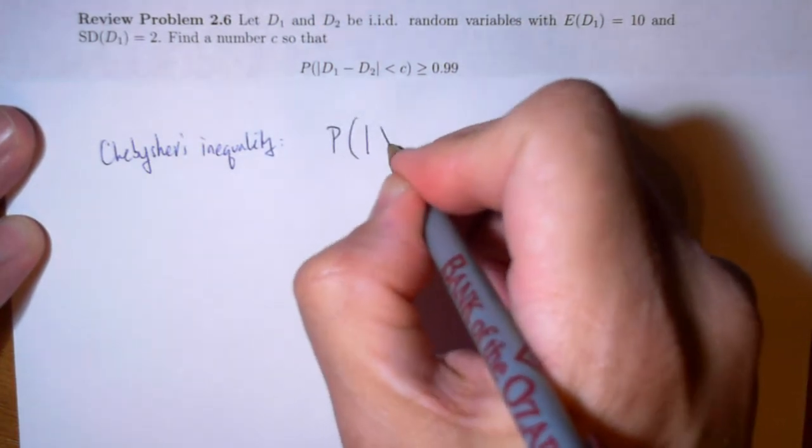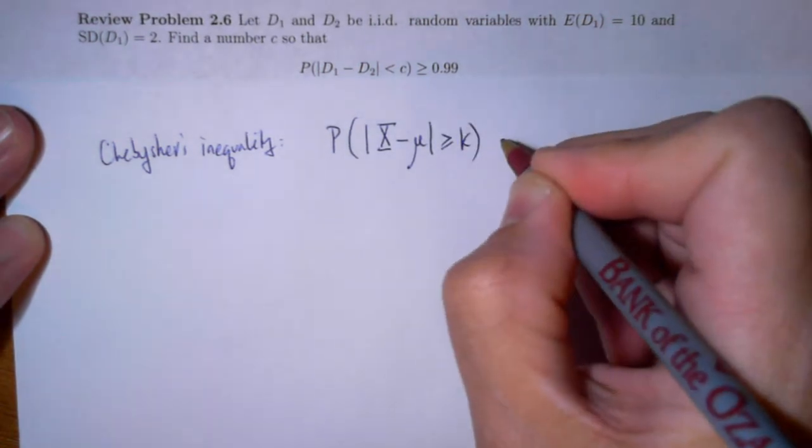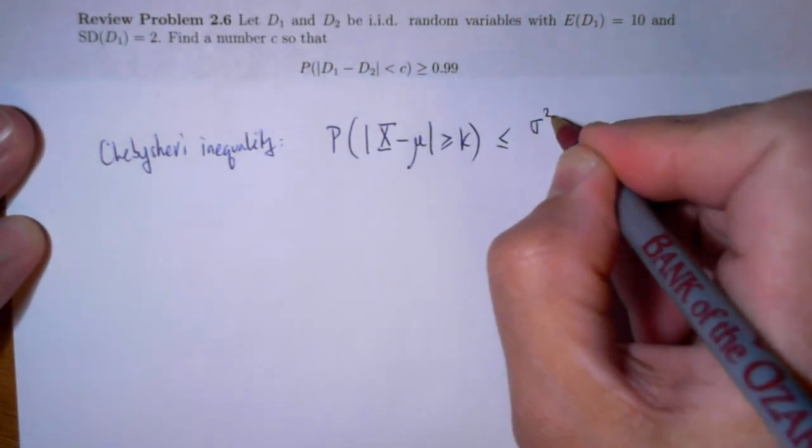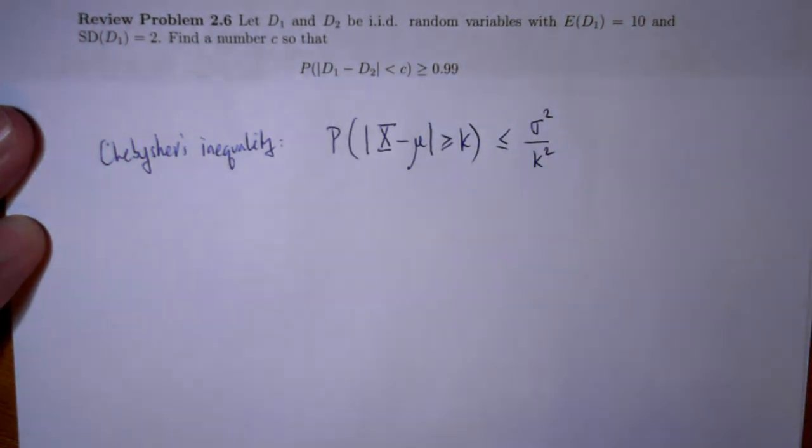the probability that a random variable x minus its mean is greater than or equal to k is less than or equal to sigma squared over k squared. So that is the statement of Chebyshev's inequality.